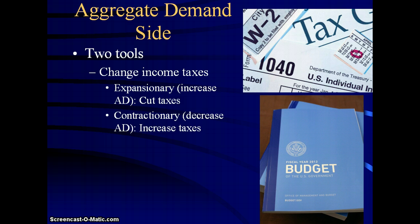They come in the expansionary form. Expansionary increases AD. So what do you want to do if you want to expand the economy? You would cut taxes. If you cut taxes, more money goes back into the hands of the average person, and therefore the average person can spend more money on things like cars, televisions, food, and whatever else they might like. Remember, there are four parts to the aggregate demand curve: C, I, G, and X. By cutting taxes, the C and I can easily get bigger because people have more money in their pockets to spend.